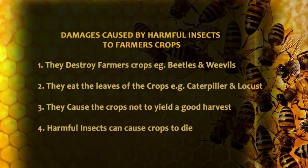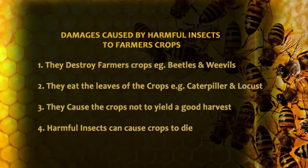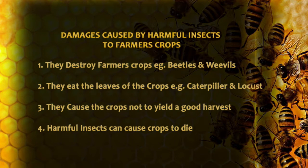Now let's look at the damages caused by harmful insects to farmers' crops. Number one, they destroy farmers' crops — that is, in the field and also in the store. Examples of the insects are beetle and weevils. Number two, they eat the leaves of the crops — example, caterpillar and locusts. Number three, they cause the crops not to yield a good harvest; that is to say, a farmer who supposed to harvest five bags of rice may end up harvesting two or less. Number four, harmful insects can cause crops to die.